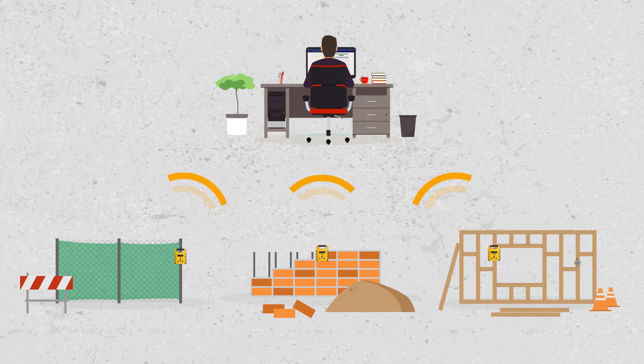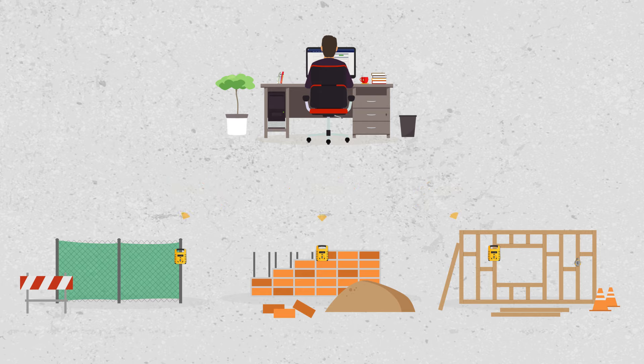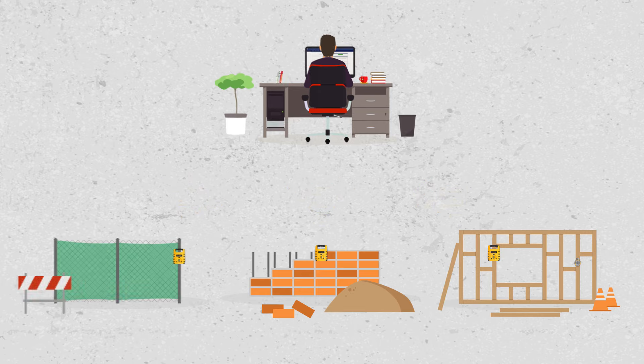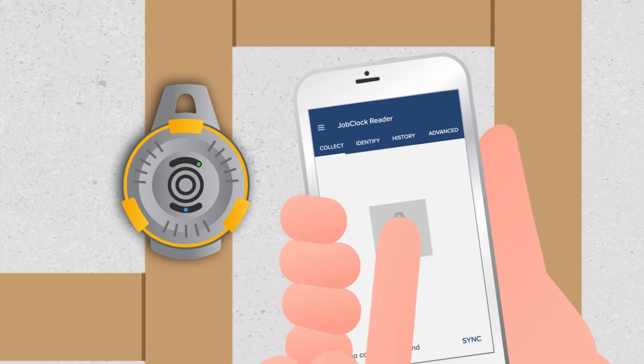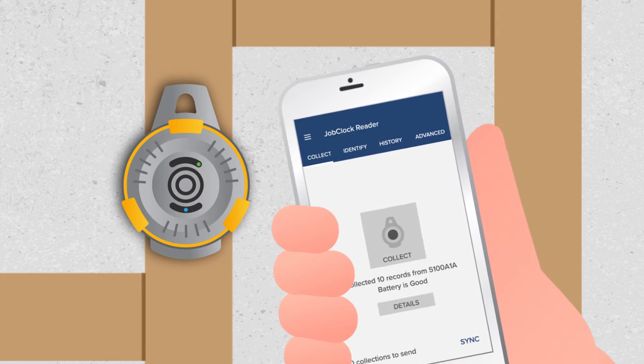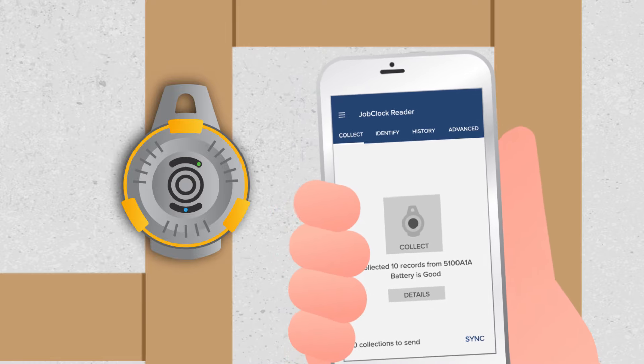The Job Clock Hornet wirelessly transmits time records to the cloud every hour, giving you instant oversight on the field from anywhere. The Job Clock LE allows supervisors to use the ExactTime mobile app on their smartphone to collect time records via Bluetooth.